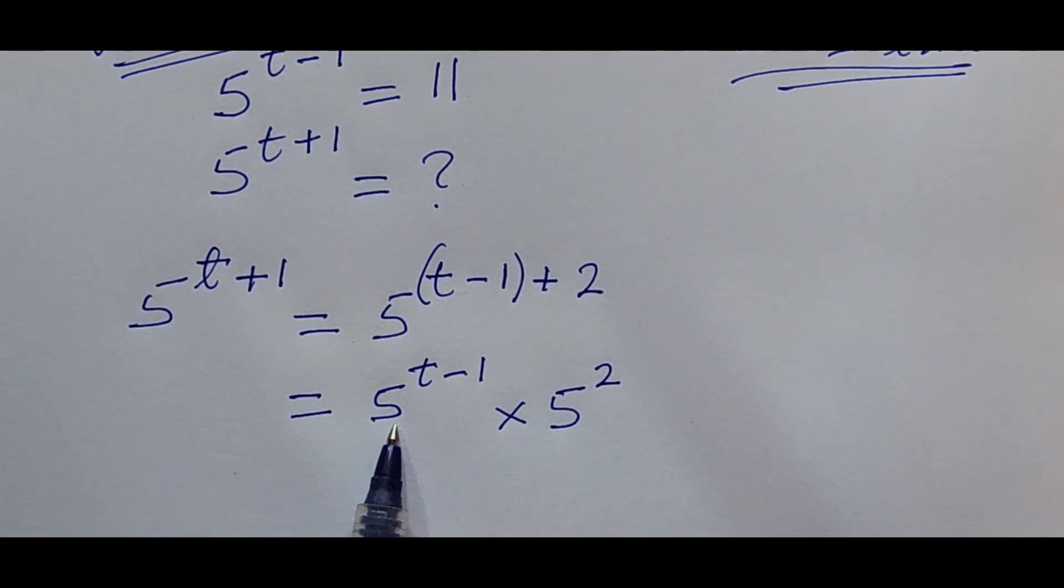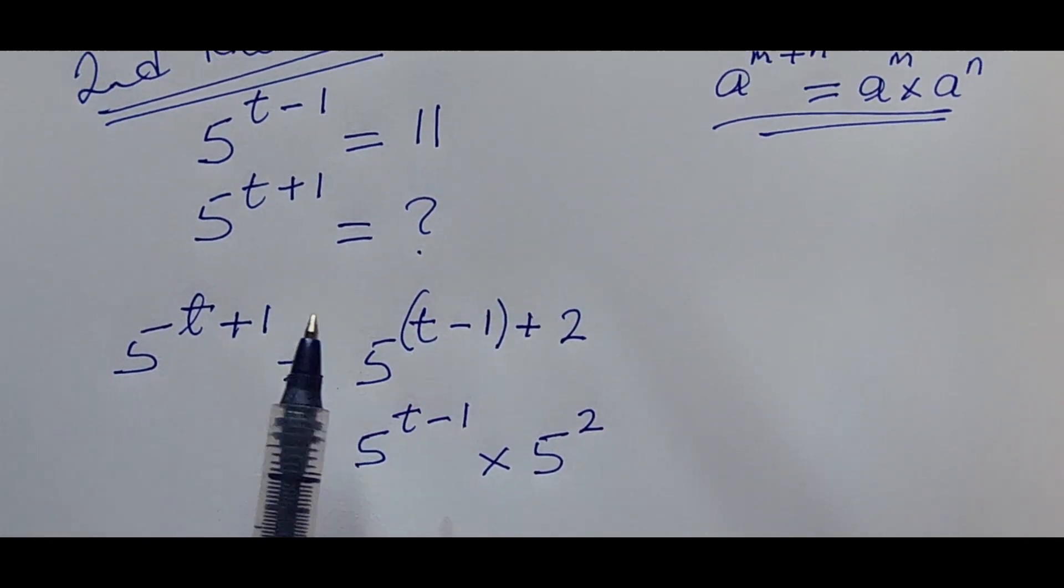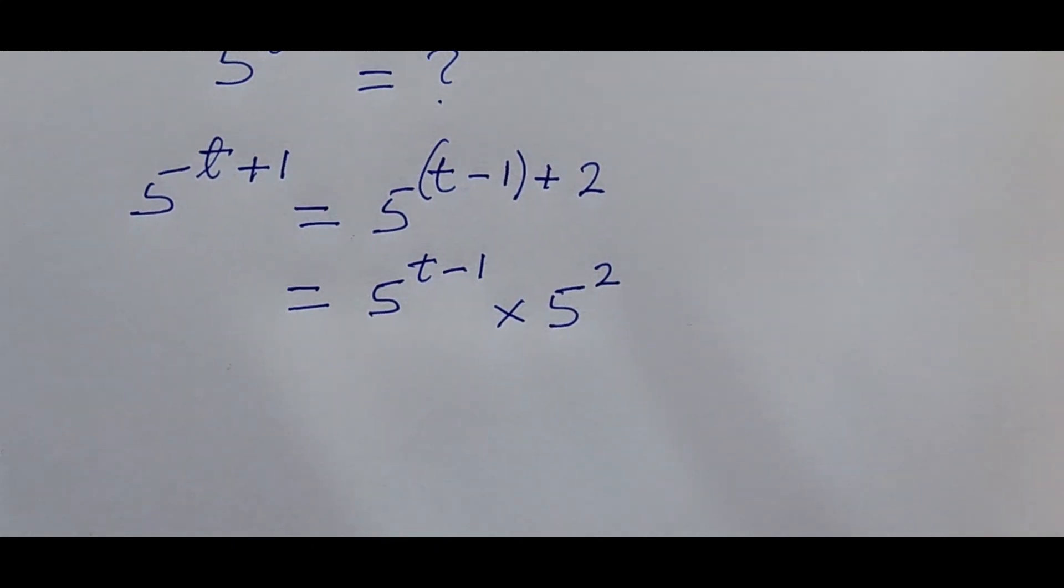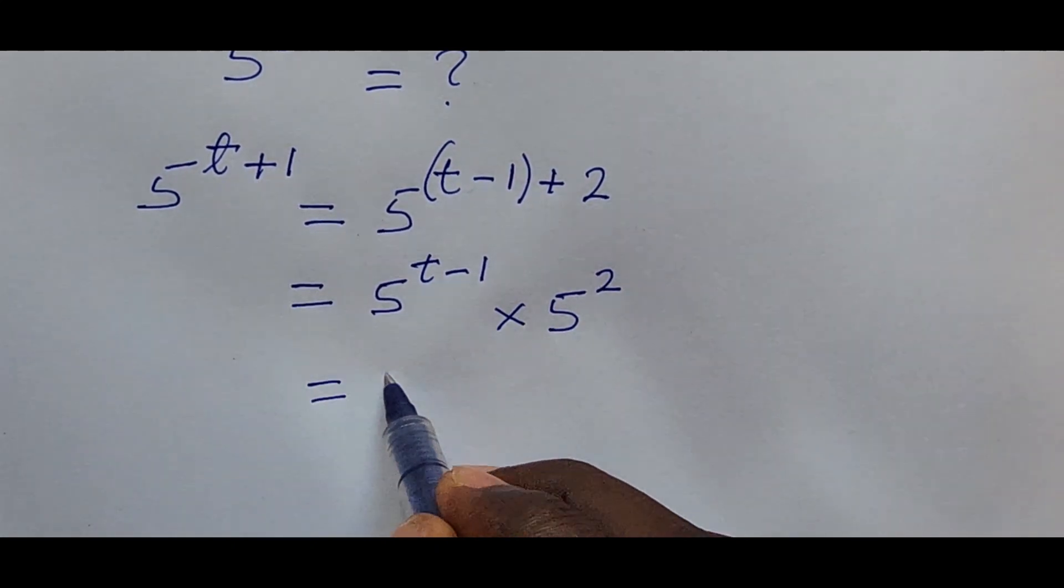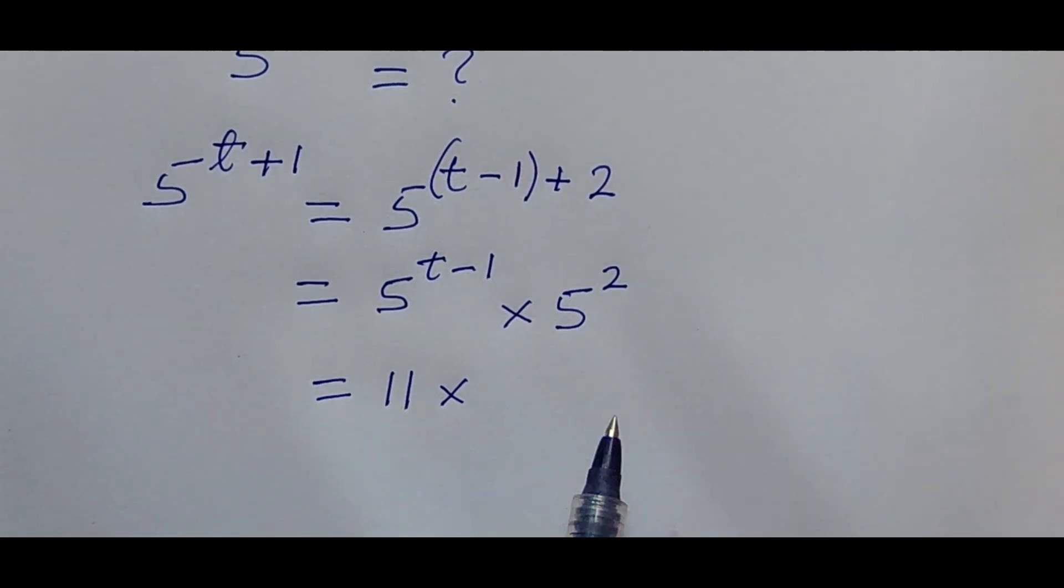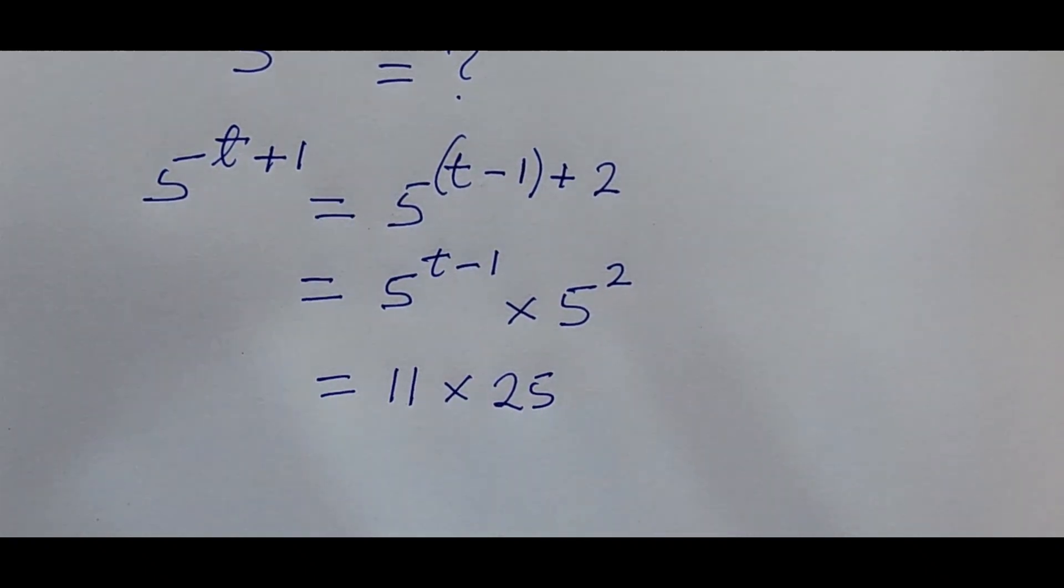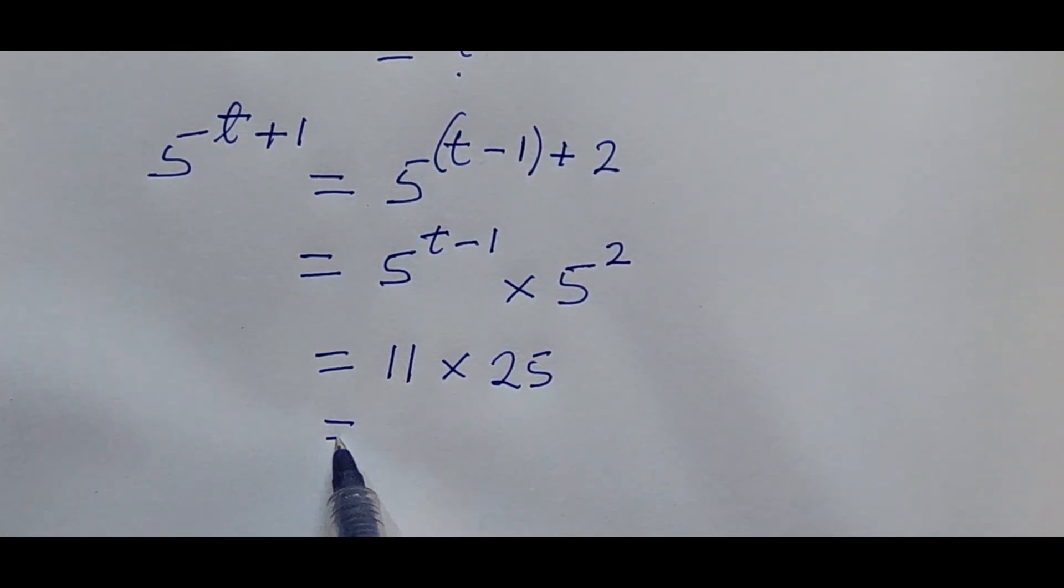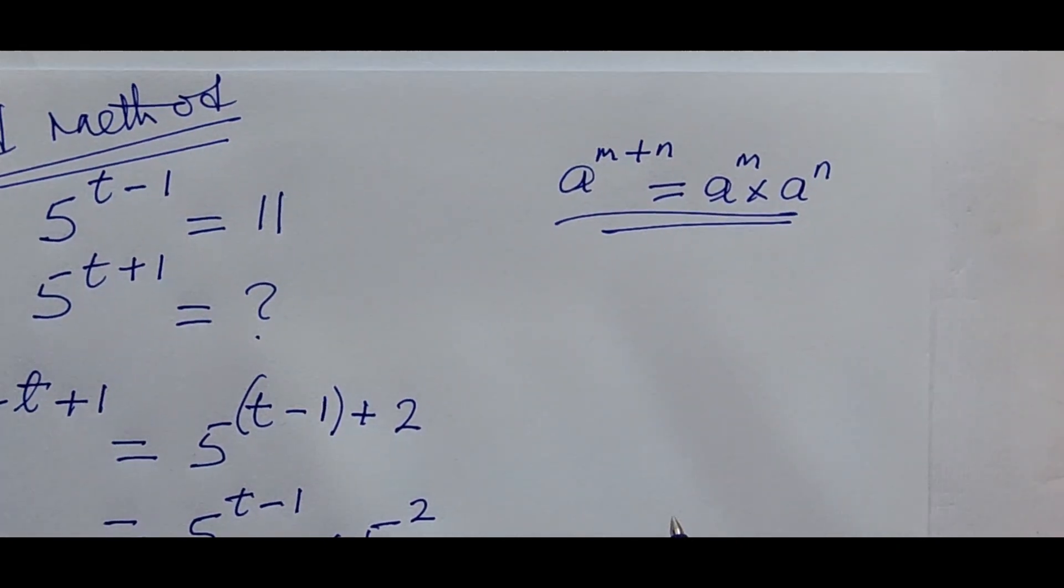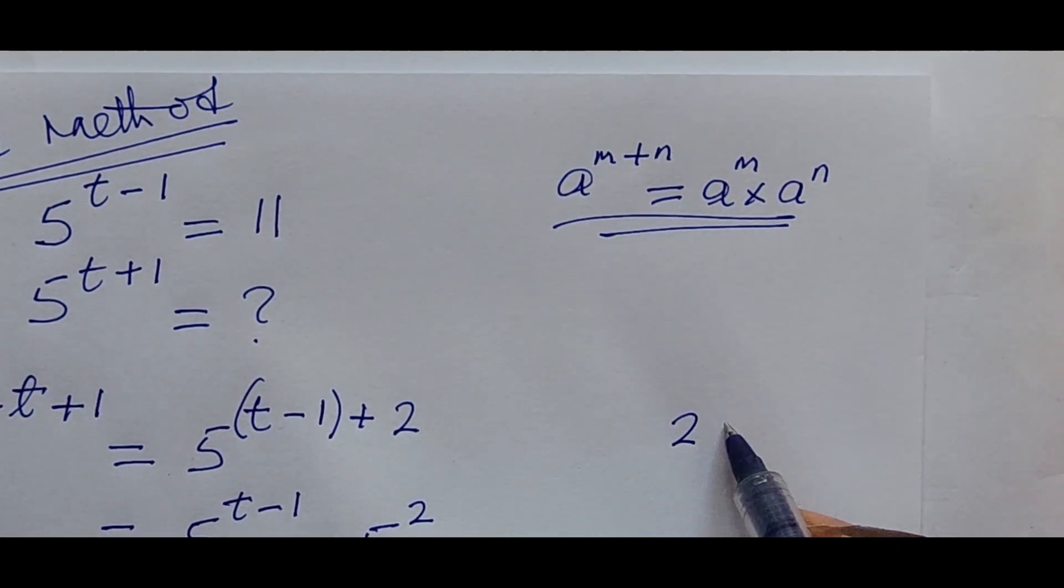So what is our 5 to the power of t minus 1? Look at it, it's given to be 11. So this is going to give us our 11 times what is 5 to the power of 2? That is 25.